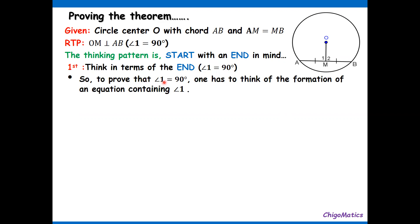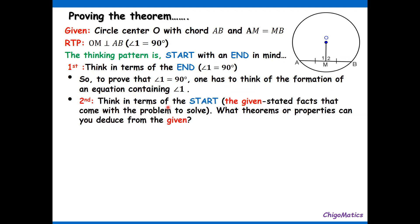So to prove that angle one is equal to 90, one has to think of the formation of an equation containing angle one, because this is an equation and we have to formulate an equation to end up with an equation. Secondly, think in terms of the start: the given stated facts that come with the problem to solve. What theorems or properties can you deduce from the given? This is what is given: simply OM meeting AB where AM equals MB.